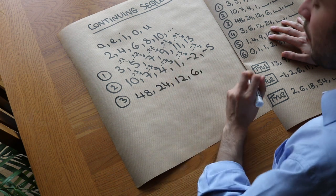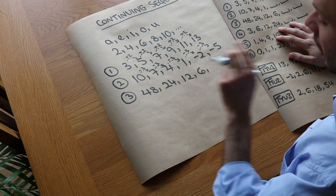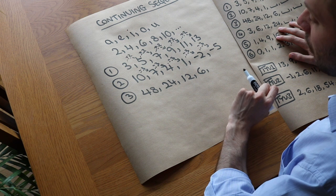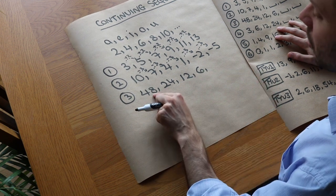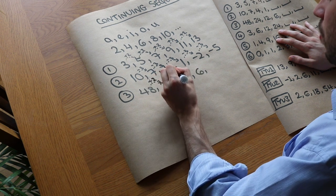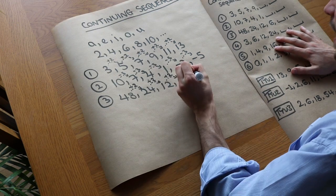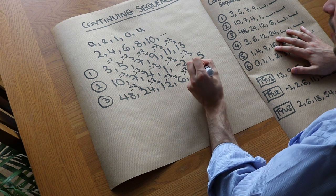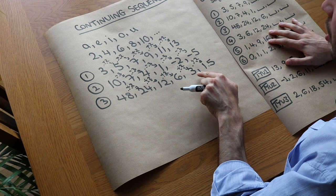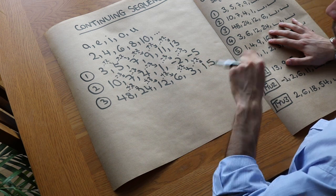The third one: 48, 24, 12, 6. We might think we're subtracting, but the amount subtracted changes each time. Instead, consider dividing: 48 divided by 2 is 24, 24 divided by 2 is 12, 12 divided by 2 is 6 — we're halving it. So 6 divided by 2 gives 3, and 3 divided by 2 gives 1.5. A handy tip: to halve an odd number like 11, subtract 1 to get 10, halve that to get 5, then add 0.5 to get 5.5.